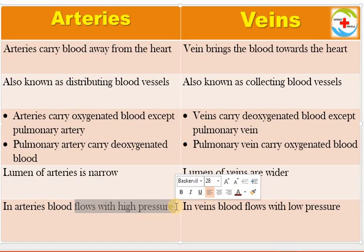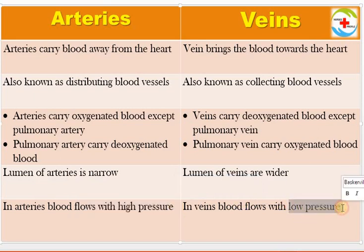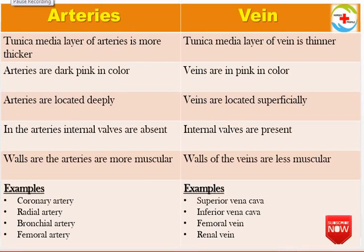In the lungs, the pulmonary artery carries deoxygenated blood. The tunica media layer is very thick in arteries, but it is very thin in veins.